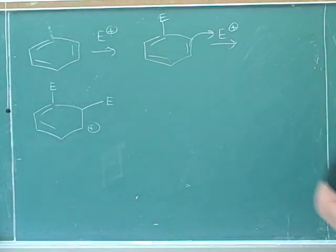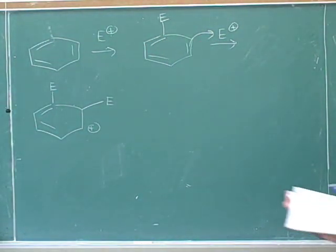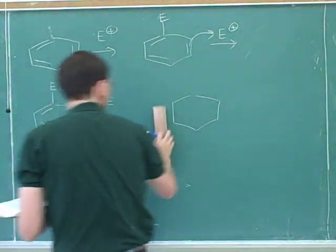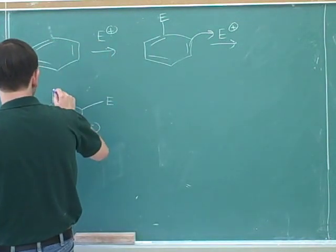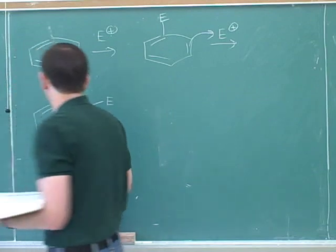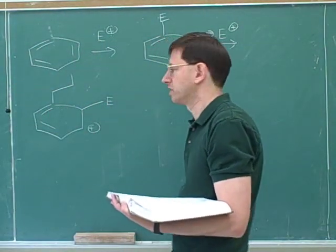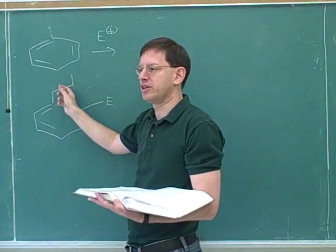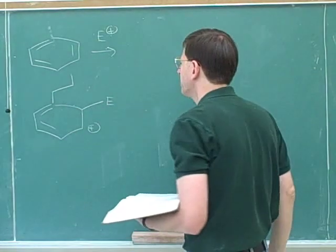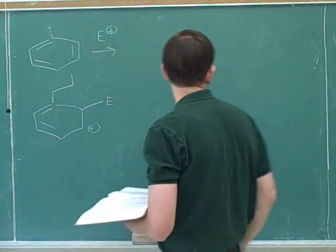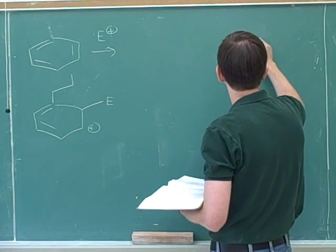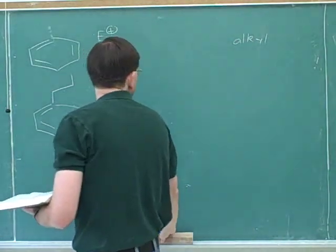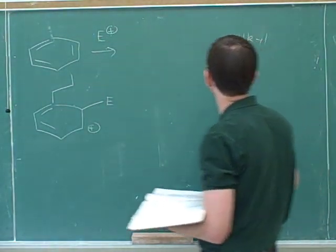Now we need to learn which substituents are electron donating and which are electron withdrawing. An alkyl chain is electron donating — they are only slightly electron donating, but they are electron donating. So alkyl groups are activators.